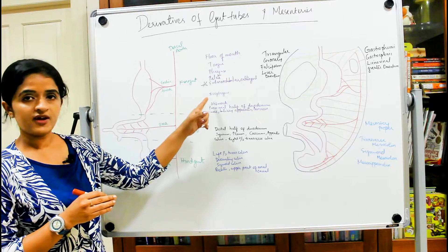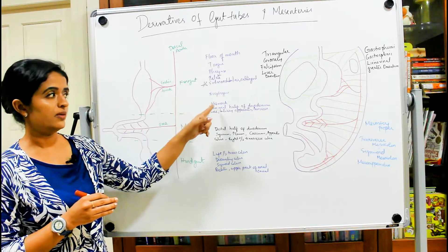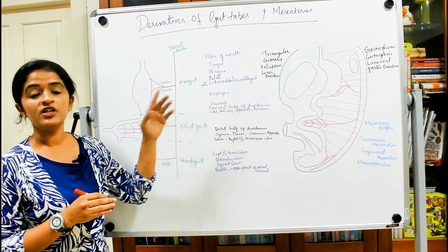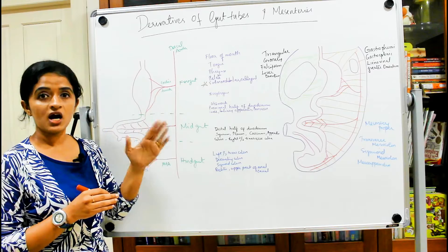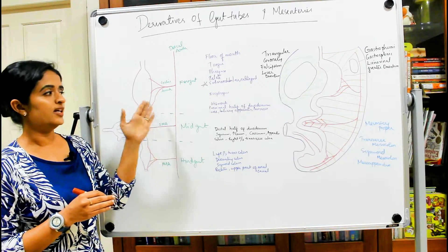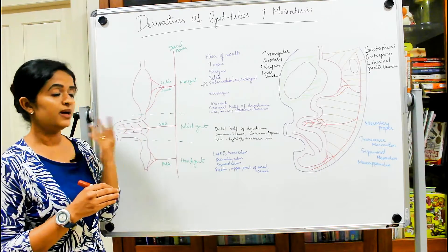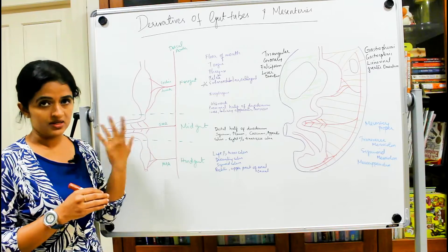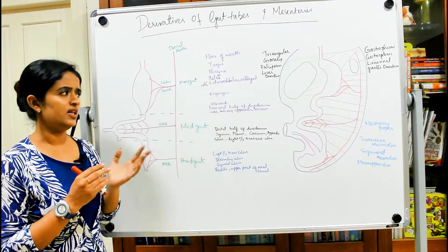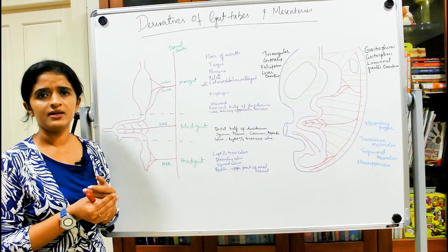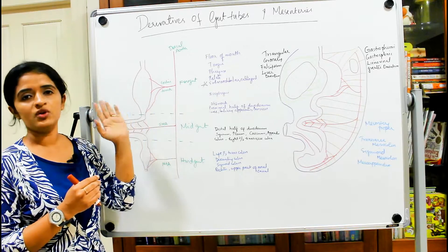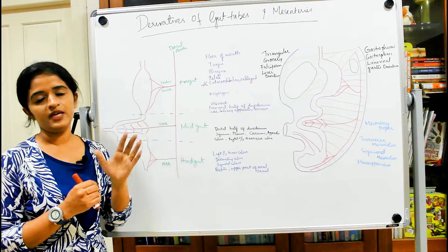Foregut derivatives also include the esophagus, stomach, and only the proximal half of the duodenum. Additionally, buds arising from the gut tube give rise to the liver, extrahepatic biliary apparatus, and pancreas. The spleen also develops in the mesoderm.